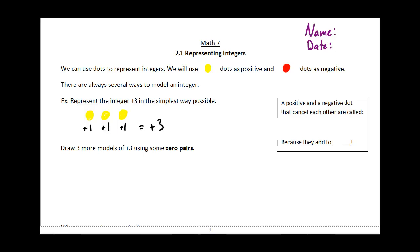Now, one thing to keep in mind with integers is that when we have a positive here, often we don't write that. So positive 3 or +3 is just the same thing as 3. If you don't see any symbol out front, then it's just positive.